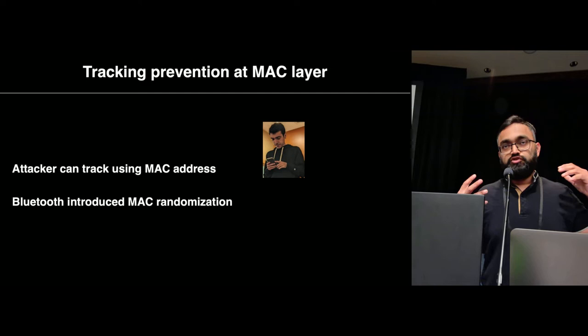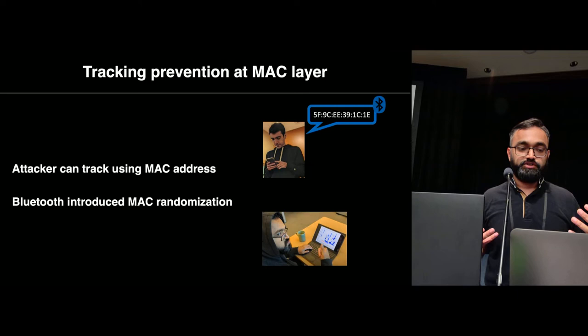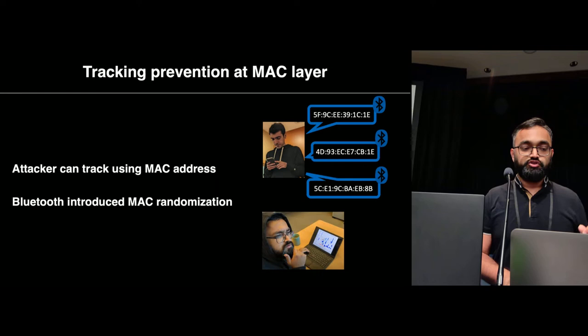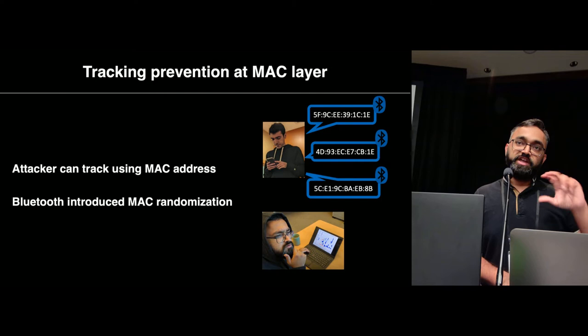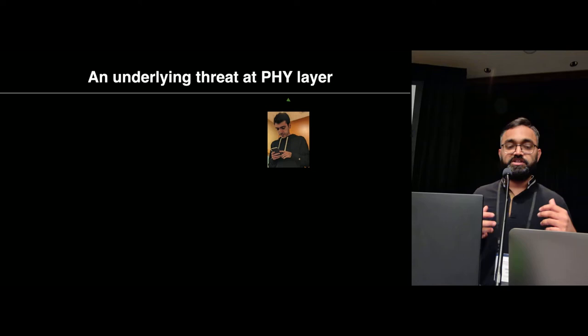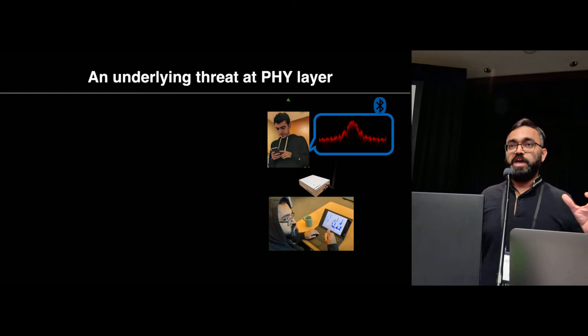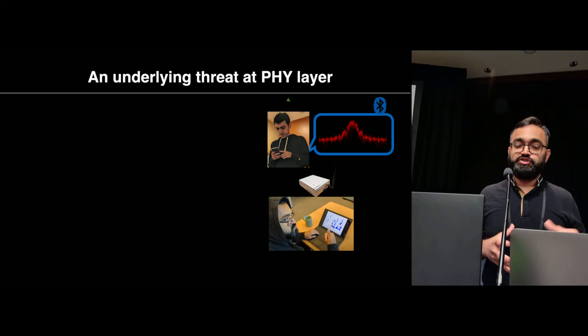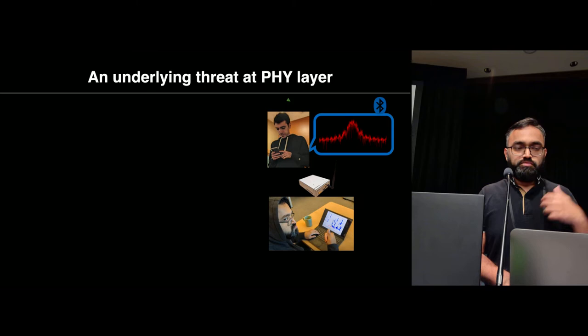To prevent this sort of privacy risk at the MAC layer, there are provisions in place. For instance, because the MAC address is a constant persistent identifier, Bluetooth introduced rotating MAC addresses. However, these protections don't solve the complete problem because an underlying threat still exists at the physical layer. An attacker can capture the actual raw wireless signal using an SDR and measure distortions due to hardware imperfections, using those as a fingerprint to track you.